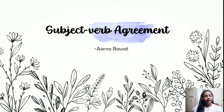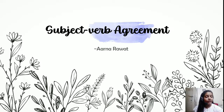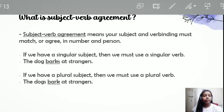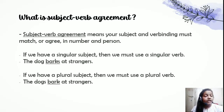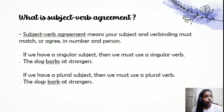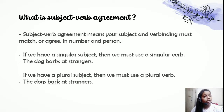Hello everyone, I am Arna Rawat and today we will be learning about subject-verb agreement. It is a very important topic in grammar as it depends on how we use the verb. It contains several rules that need to be memorized to speak correct English. Subject-verb agreement means that our subject and verb must match or agree in number and person. If our subject is singular then we must use a singular verb, and if the subject is plural we must use a plural verb.